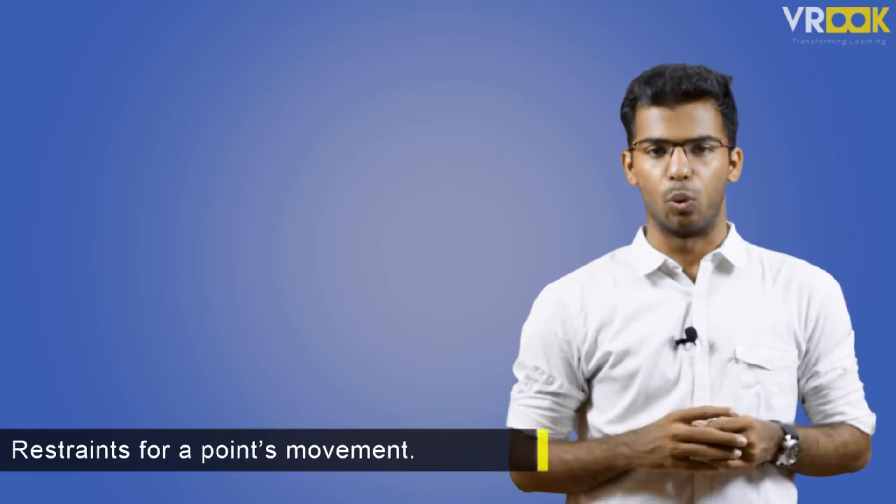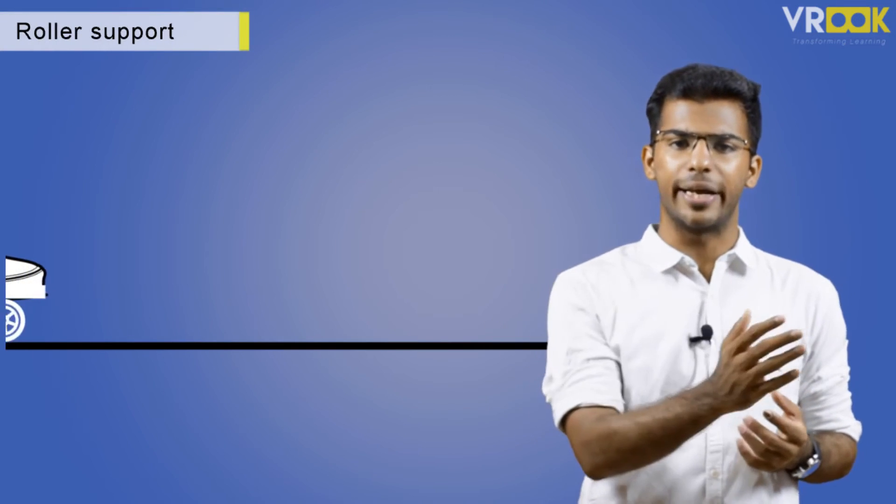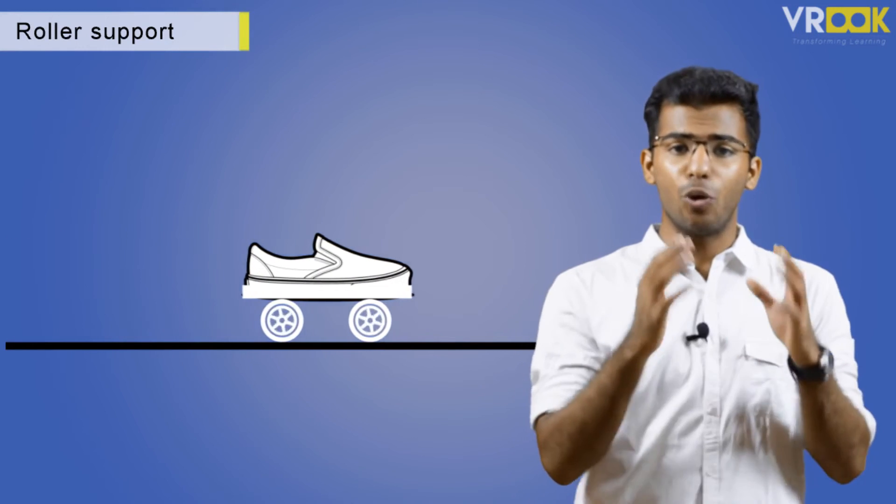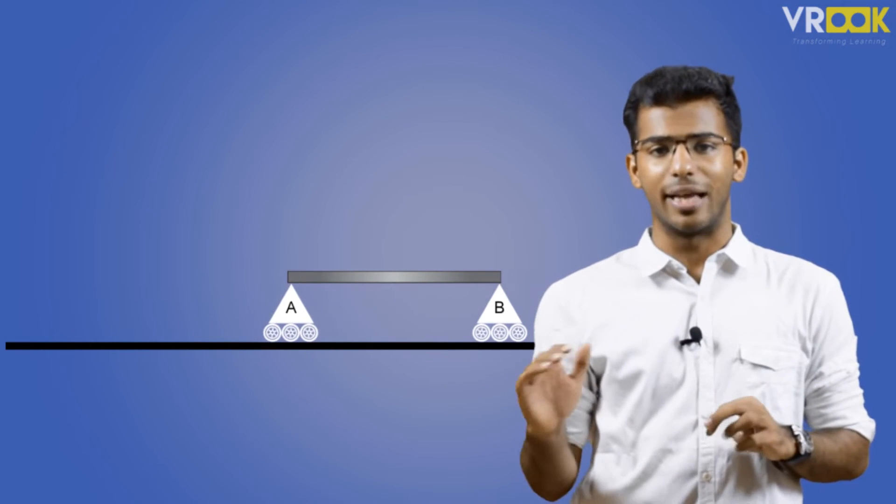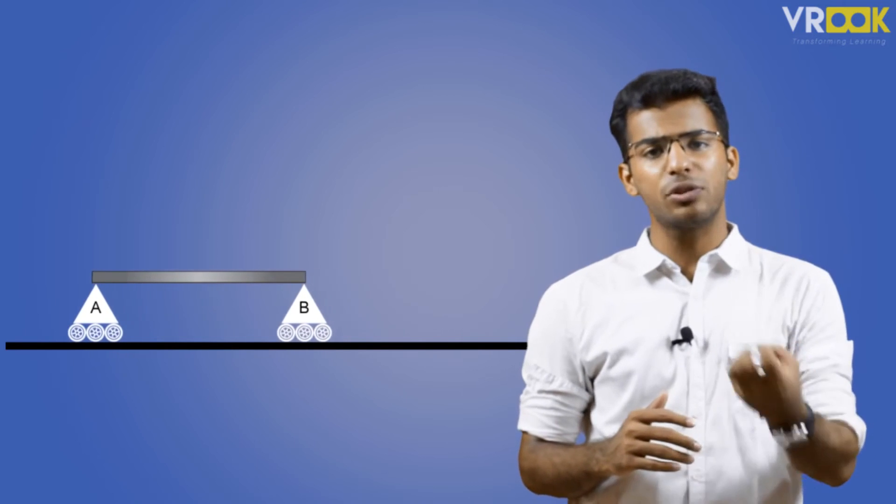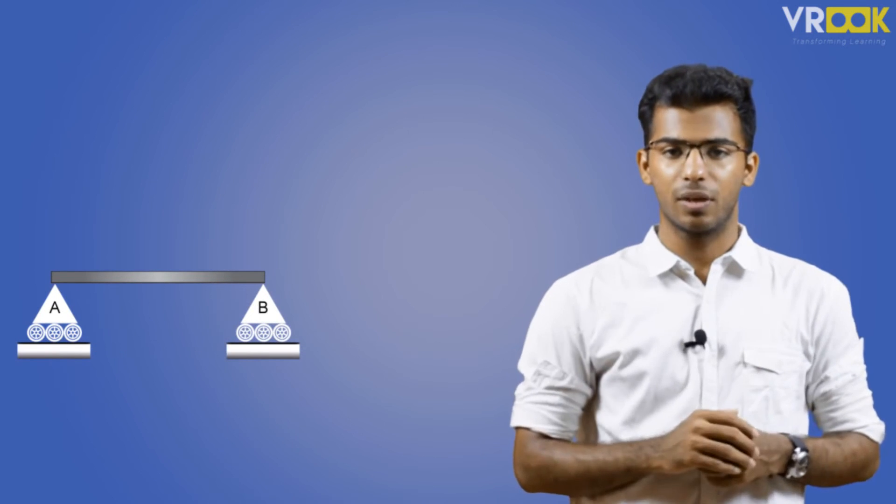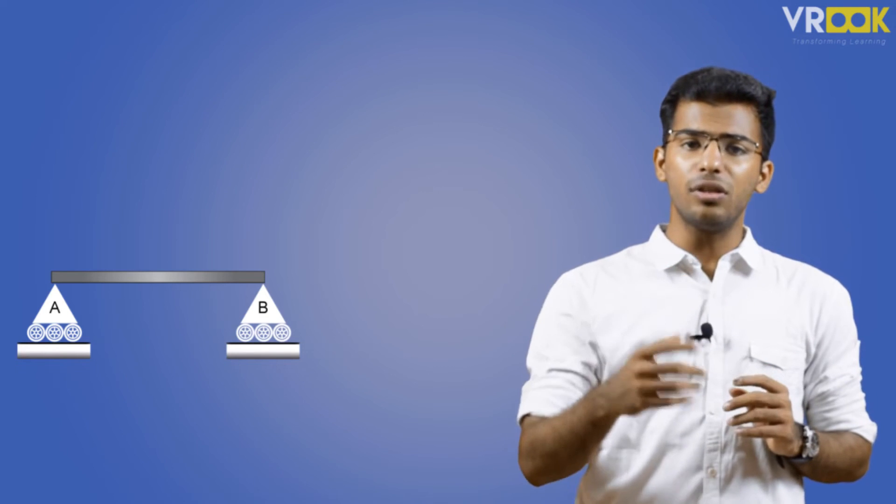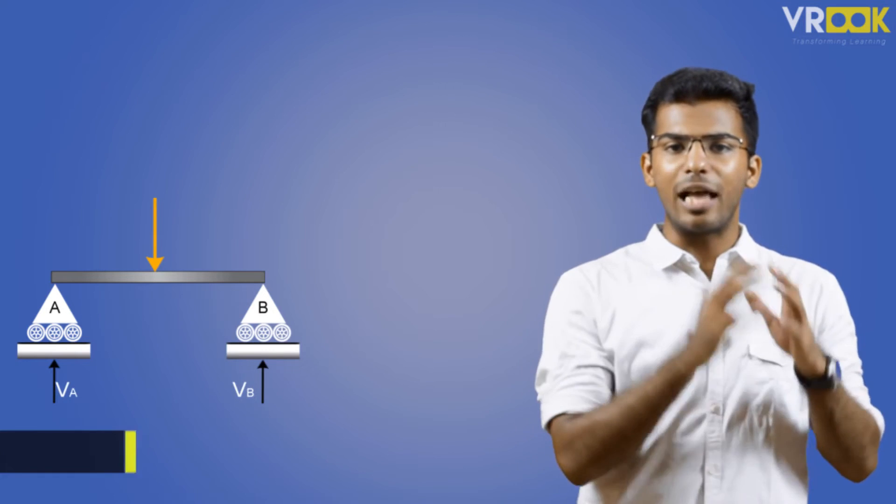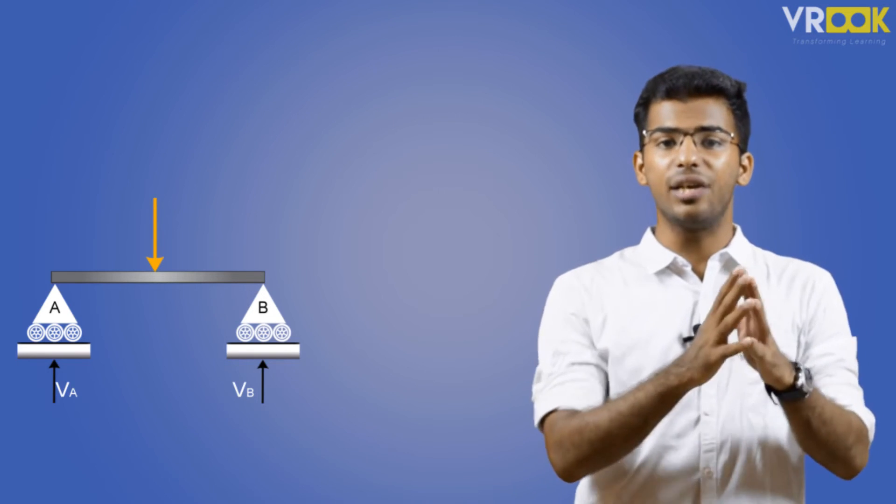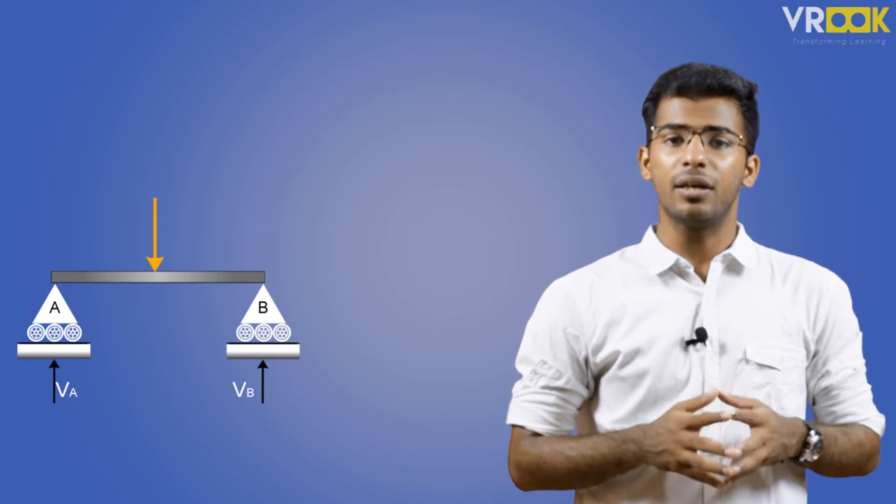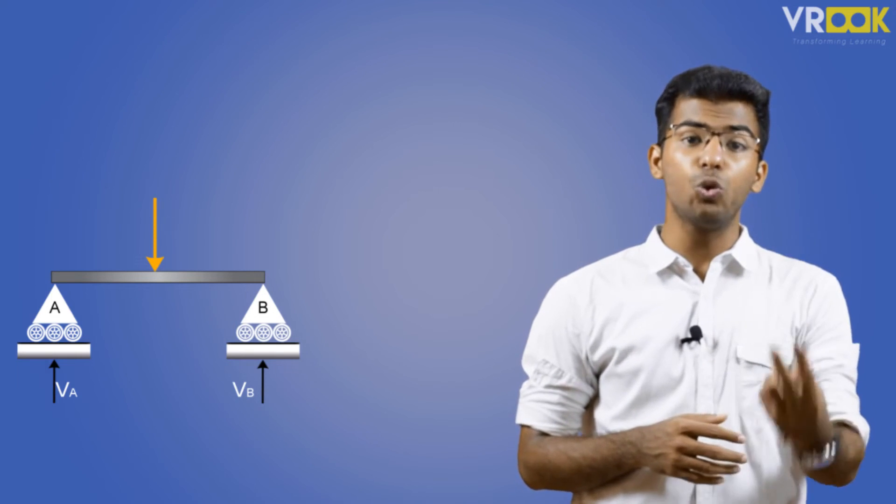Now let's move on to the third support, that is roller support. The best example will be a roller skate where you can freely move around but you have a roller supporting at the bottom. The roller skate has no restriction in the horizontal direction whereas there is an equal and opposite reaction force applied at the bottom. We can represent the roller support like this. This support is very similar to simple support. It will have only one reaction force or restraint in one direction, that is a vertical reaction force. But remember your hinge support will have two reaction forces.